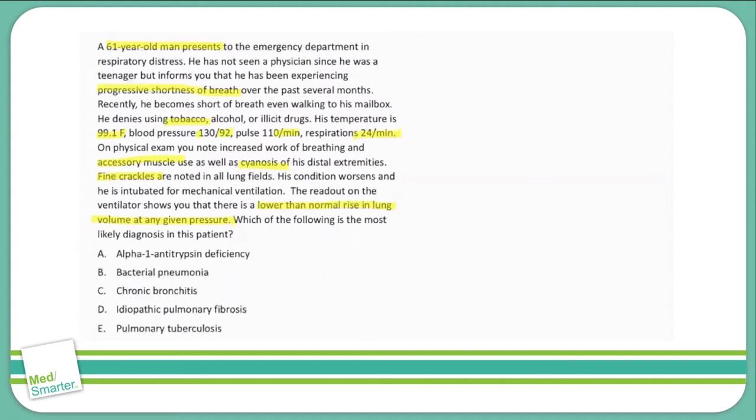Let's look at the answer choices. Starting with A, alpha-1 antitrypsin deficiency. If you're familiar with this condition, you know that it can cause a type of emphysema. But emphysema is a type of chronic obstructive pulmonary disease. And we know that COPD causes an increase in compliance, whereas in this question, we're looking for something that causes a decrease in compliance. So I'm going to think that alpha-1 antitrypsin deficiency is not the answer here.